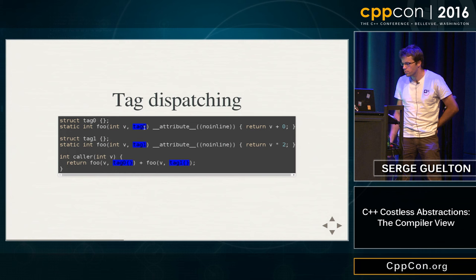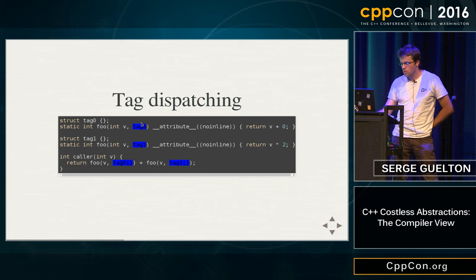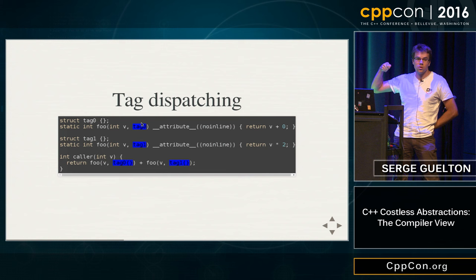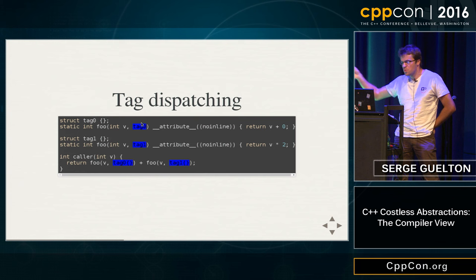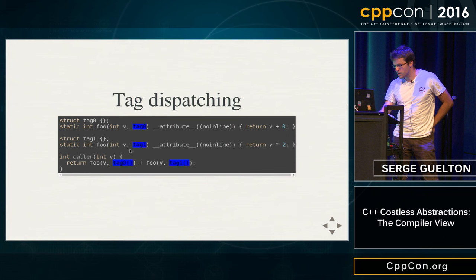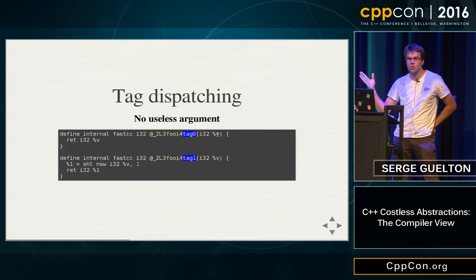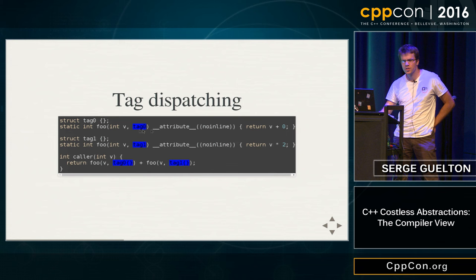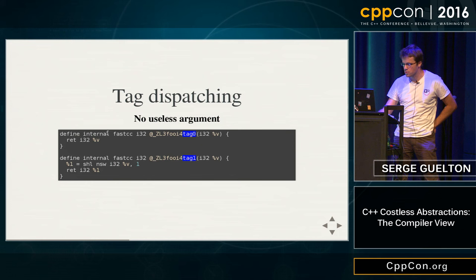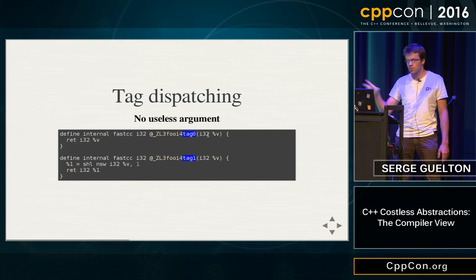Tag dispatching uses different behavior depending on a parameter that is not actually used in computation, just used to change the function signature. You might worry this adds an extra parameter, extra register pressure, possible register spilling. But if the functions are marked static, the extra parameter disappears entirely at the LLVM level — the difference between the two functions is already encoded at the name level through name mangling. So there is no cost in using tag dispatching for static functions.